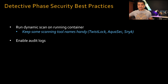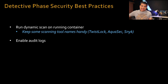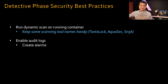The next best practice is to enable audit logs. Your control plane sends logs — for EKS it sends them to CloudWatch. Make sure you create alarms for suspicious activity, run Insights on the logs, etc.